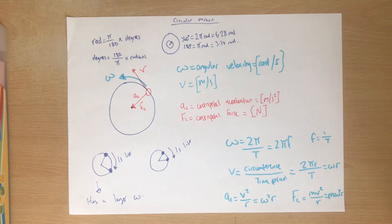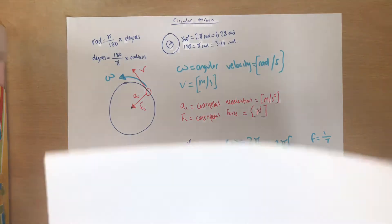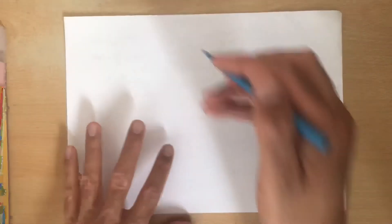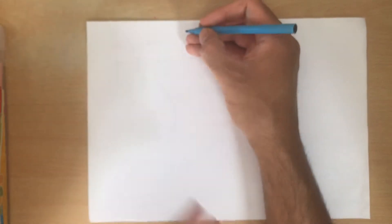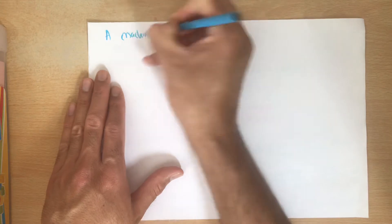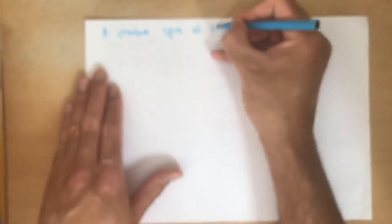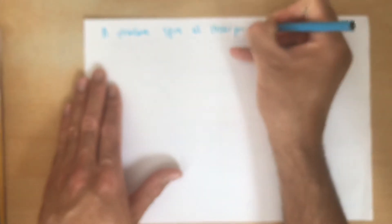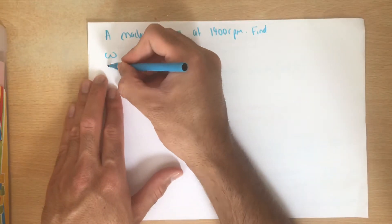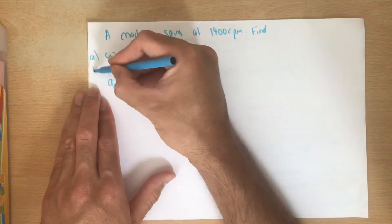So what we're going to do is go over a quick example with this one and then we're going to find that it is actually fairly easy to use. So a machine spins at 1400 revolutions per minute. Find omega, the velocity, and the acceleration to do with it. So we've got three different questions there.